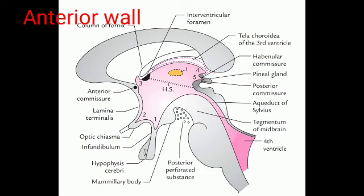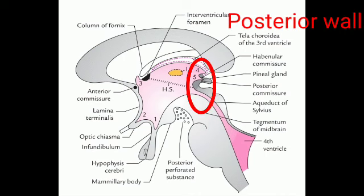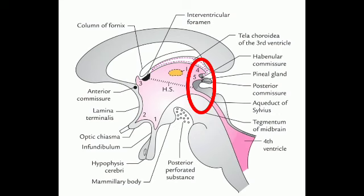The posterior wall is formed by the pineal body, posterior commissure, and habenula commissure. The floor is related to the optic chiasma, infundibulum, and mammillary bodies, and is also related to the posterior perforated substance.